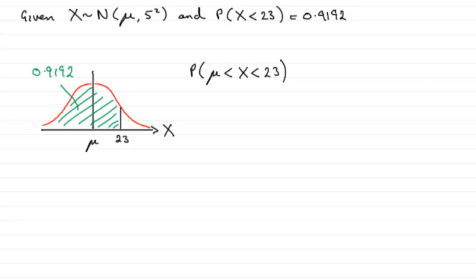So in order to work out this probability, all we've got to do is subtract the areas. In other words, we're working out the probability that X is less than 23 minus the probability that X is less than the mean mu.